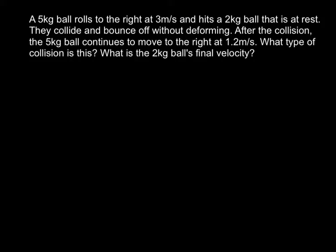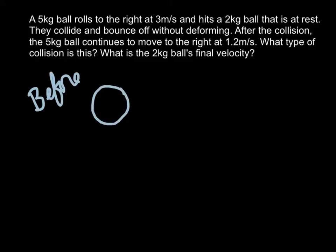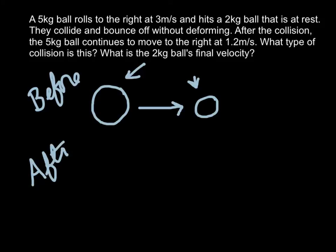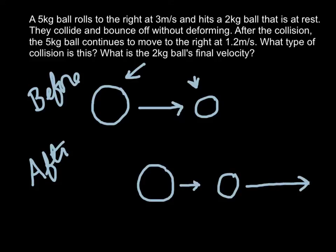When we have a problem that has a lot of numbers and there's a lot going on, it's helpful to go ahead and draw a picture of what's happening. So in our before picture, our big ball — the 5kg ball — is going to be rolling to the right, and it's going to hit a smaller mass that is at rest. Imagine this is you and a little sibling or cousin. After the collision, you're still going to be moving a little bit, but your sibling is definitely going to go flying to the right when you run into them.